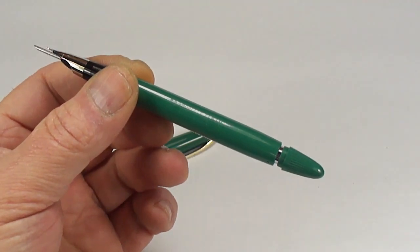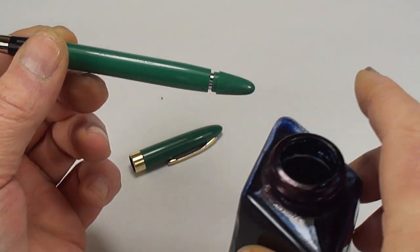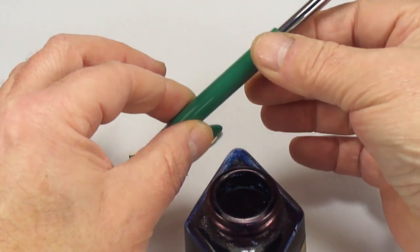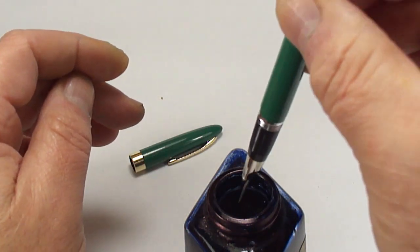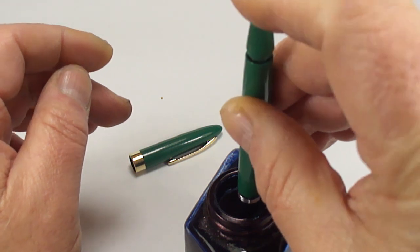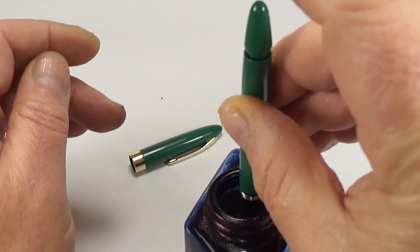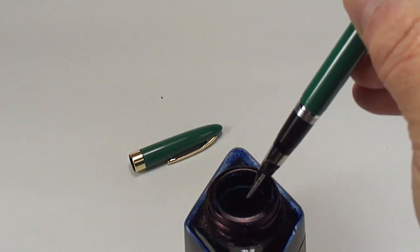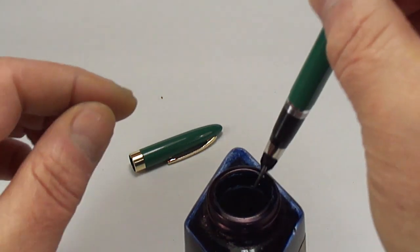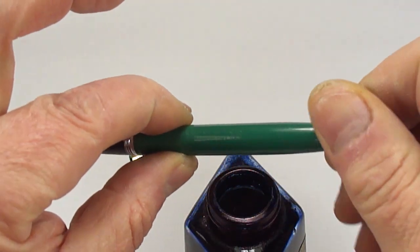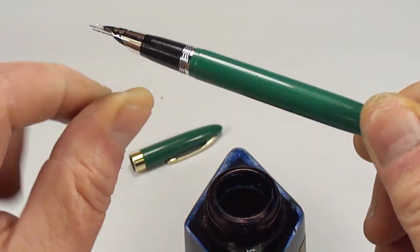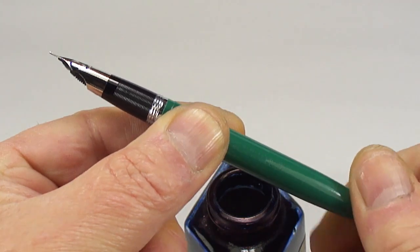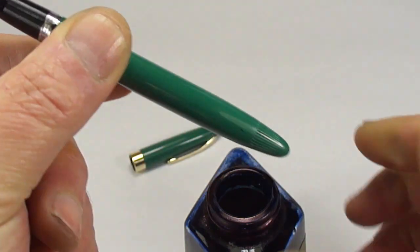So let's actually fill it for you and let's see how the pen writes. So we pull out the plunger knob as far as it'll go, dip the snorkel in the ink, and I'm quite sure you could actually hear that, that lovely sort of gushing sound. And then what we do, we simply turn the plunger knob as far as it'll go, and you'll see the snorkel retracts back into the nib.